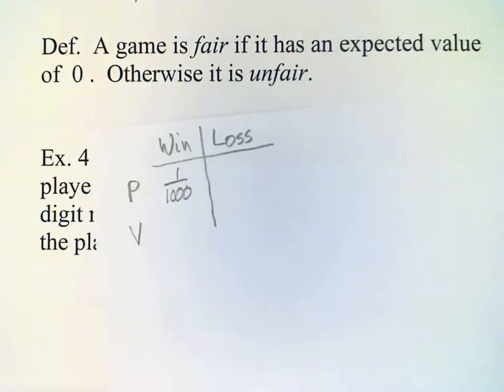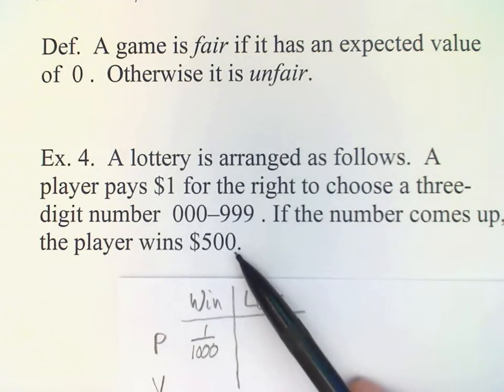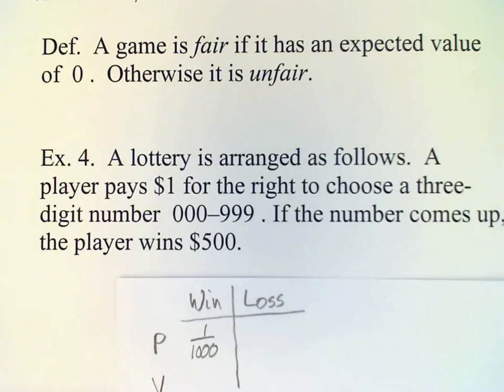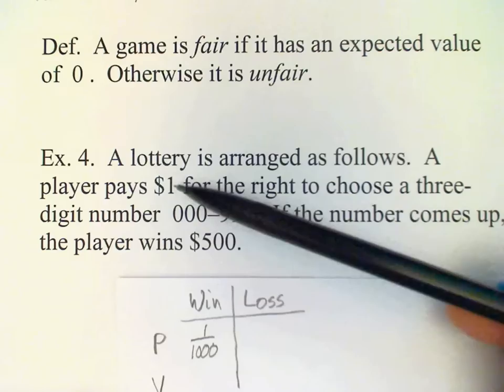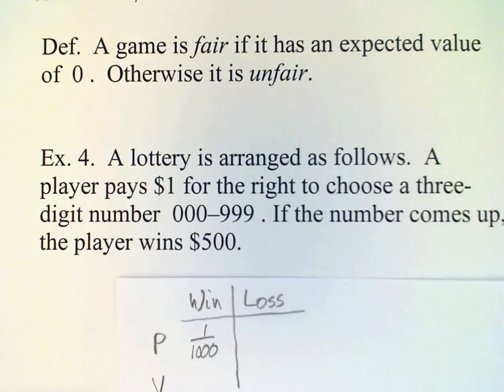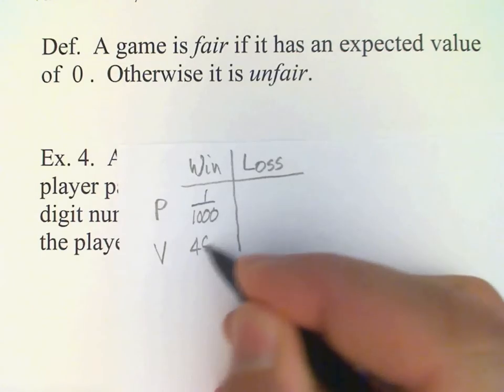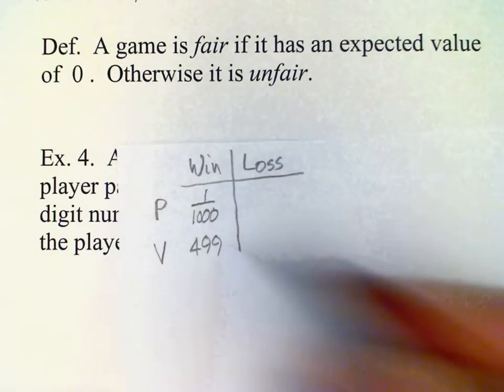And the value to us, and we need to be a little careful here, because if we're not careful, then we're going to write down $500 for the value of the win. But the value of the win is not quite $500, because we had to pay $1 to play the game. Okay, so if we had a payoff of $500, what we really won is not $500, but $499, isn't it? Okay, so we have a value of $499 for the win.